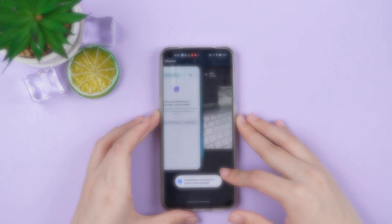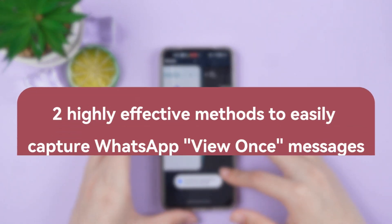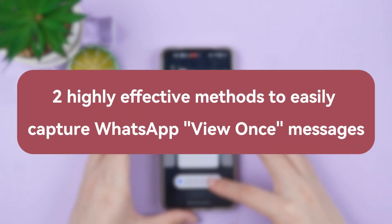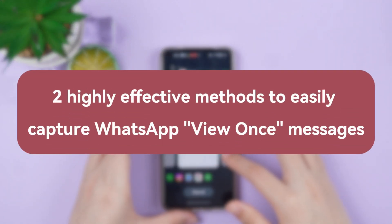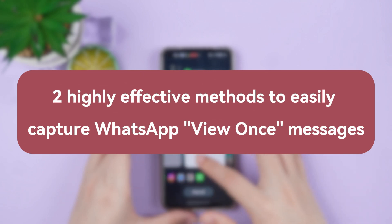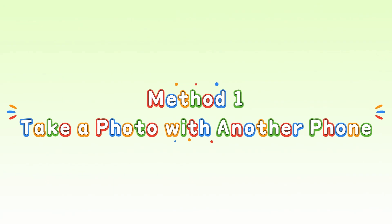Don't worry. Today, we're sharing two highly effective methods to help you easily capture WhatsApp view once messages. Method 1: take a photo with another phone.